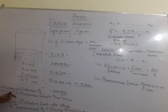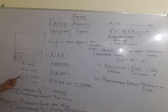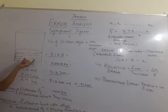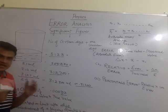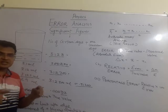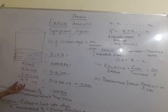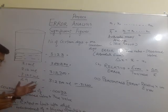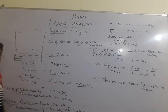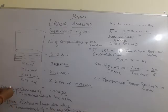The number of significant figures is more where we have more digits. Significant figures are defined as the number of certain digits plus one uncertain digit. In any measurement, a number of digits are certain, and we have plus one digit which is uncertain. In this example, we have 3.123 mm as the more accurate reading.